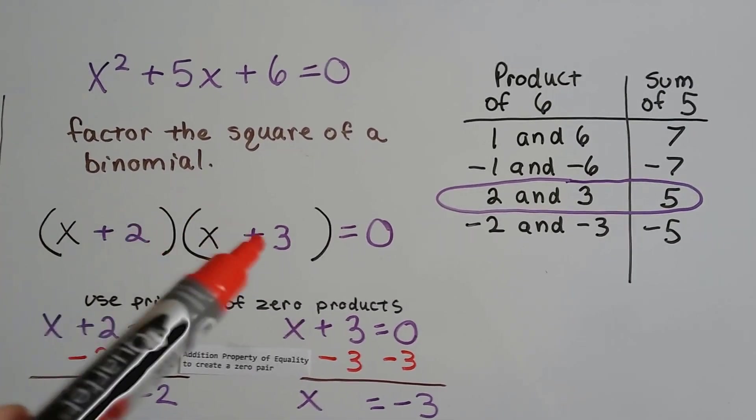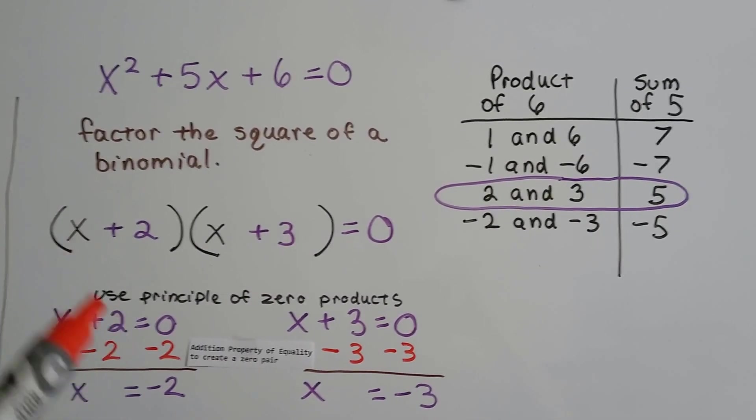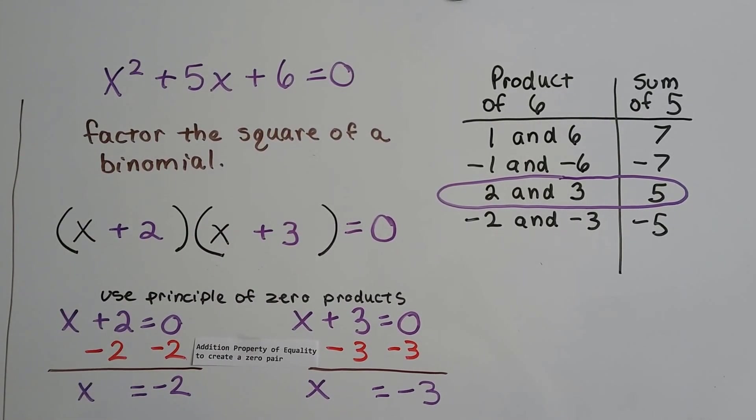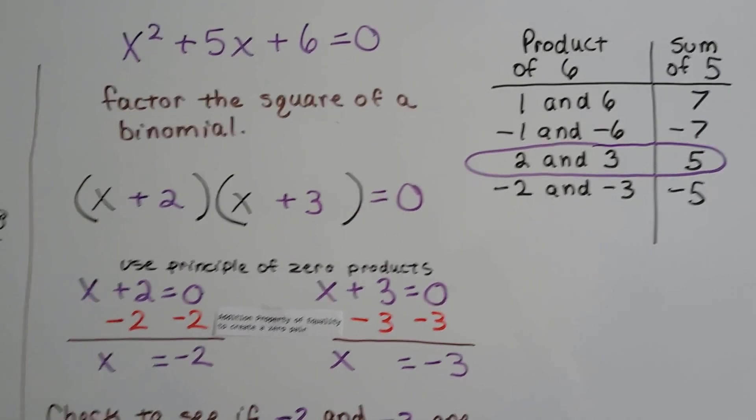So we have our parentheses. We saw the x squared, so we just made parentheses right away, two sets, and threw an x in the front of each one. And now we know that it's going to be a plus 2 and a plus 3.